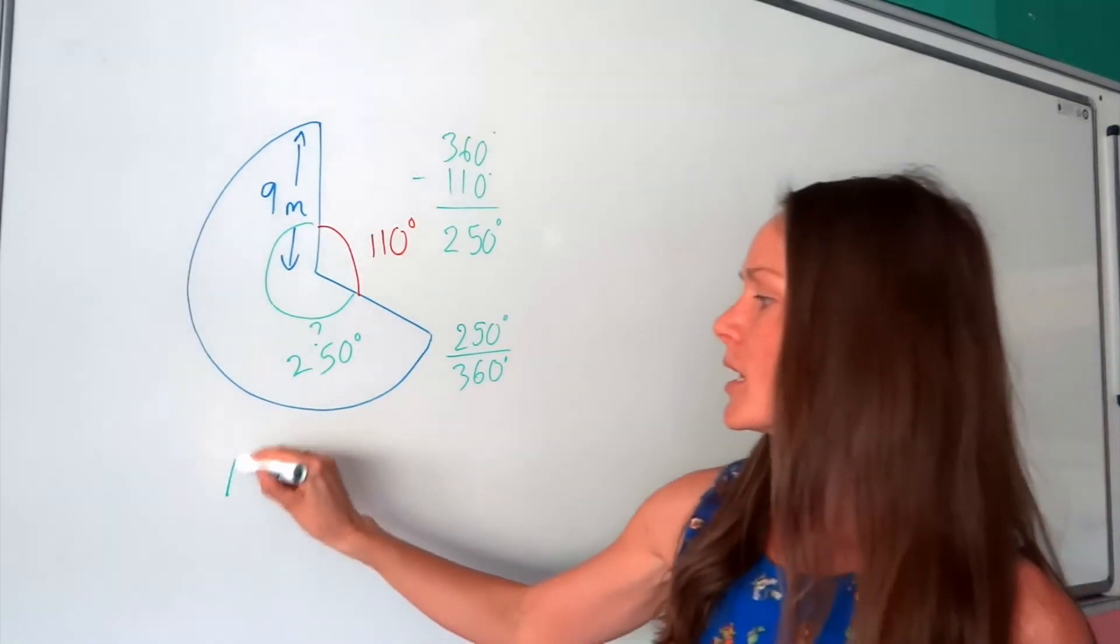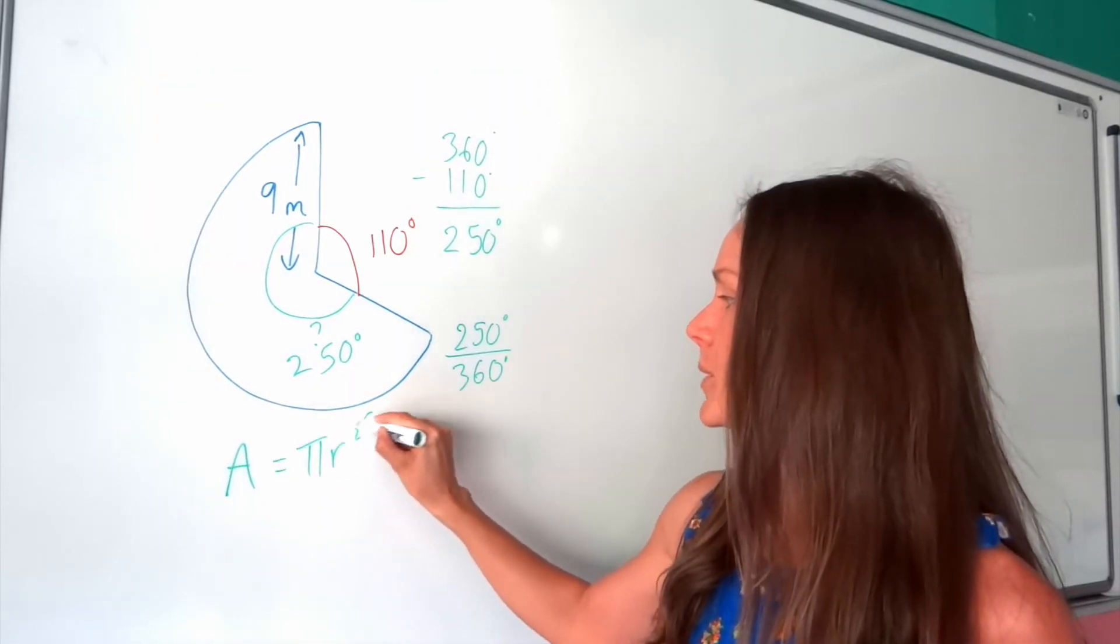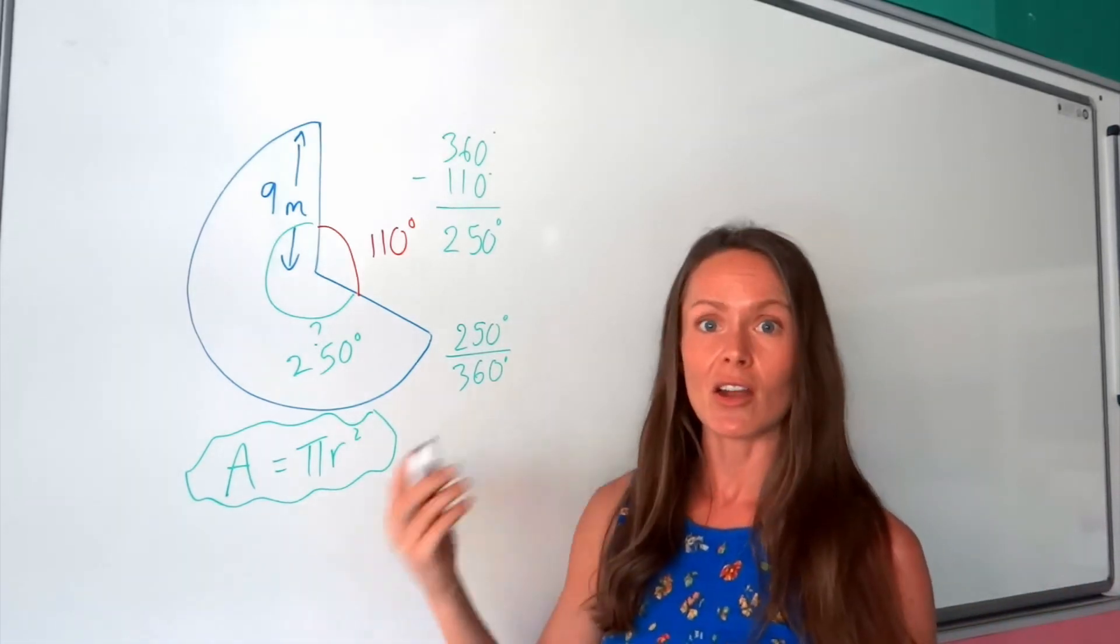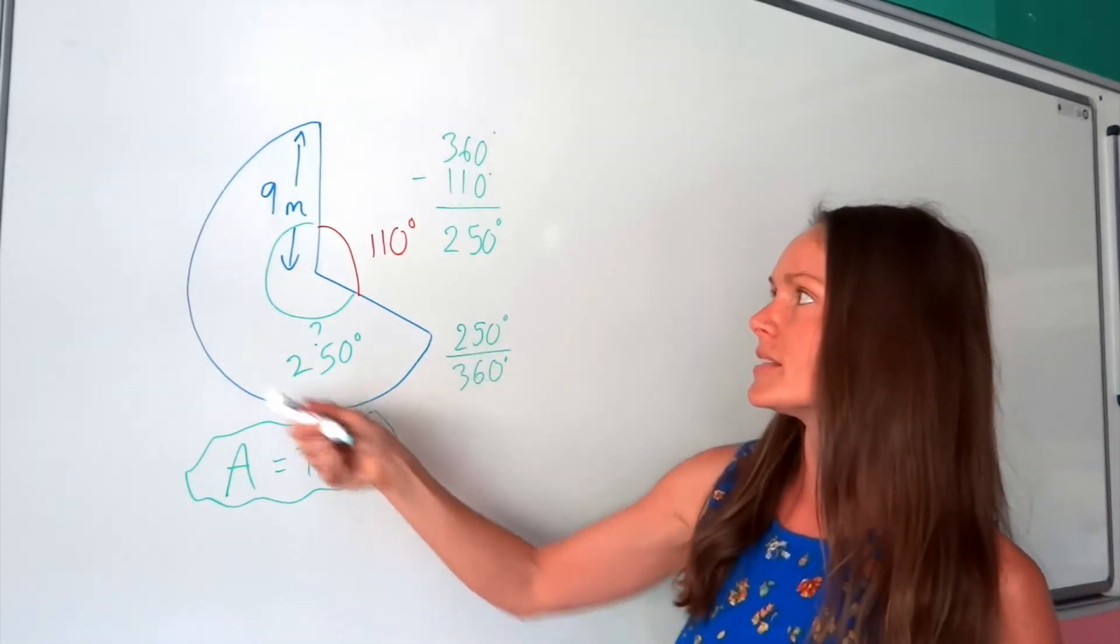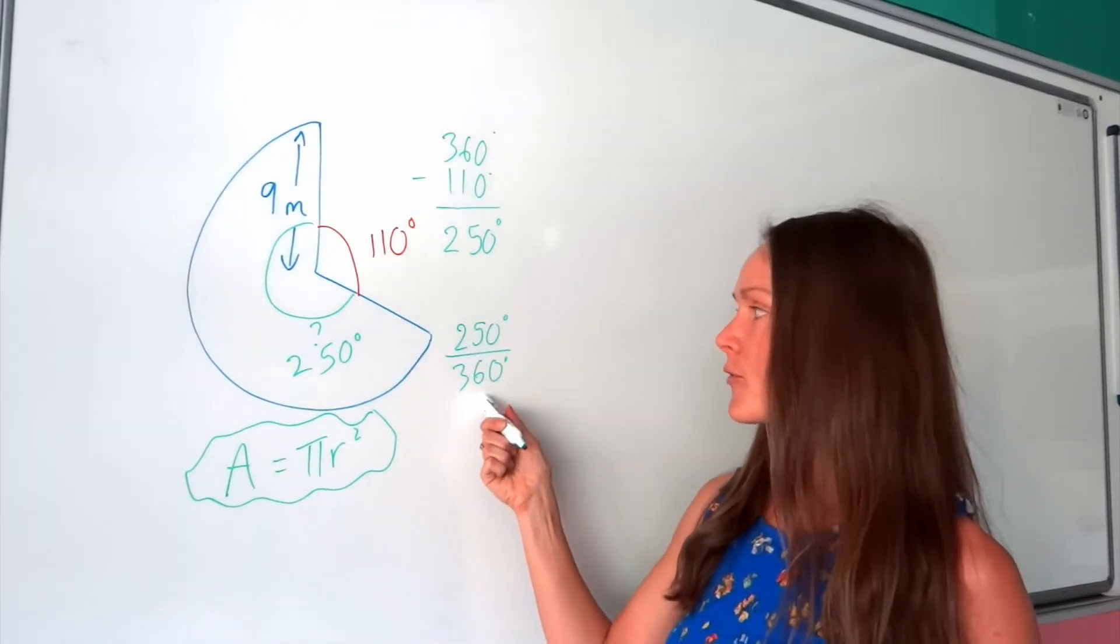Now remember, the formula for area of a circle is A equals pi r squared. So we need to use that. That's the formula to work out the area of an entire circle. But we only want this section of the circle here. So we need to times that formula by our fraction.